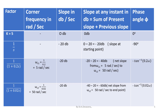This factor has a phase angle of minus tan-inverse of 0.2ω. Now we analyze the fourth factor 1/(1 + 0.02s). This factor has corner frequency ωc2 = 1/0.02 = 50 radians per second. It has a slope of minus 20 dB. The slope at any instant is minus 40 dB minus 20 dB, that is minus 60 dB. This is the net slope from ωc2 = 50 radians per second to the end point. This factor has a phase angle of minus tan-inverse of 0.02ω.